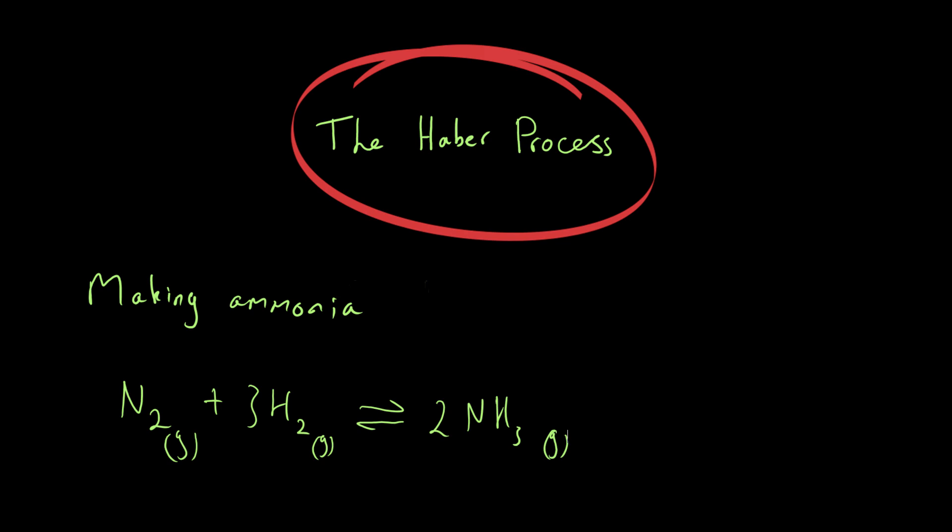Now the first obvious question is why bother? Why do we hear about this process quite a lot? Well, plants need nitrogen just like we do, but plants photosynthesize and produce carbohydrates which don't contain nitrogen. They still need nitrogen to make their proteins and grow properly. Ammonia obviously contains nitrogen, but a better way for plants to take in nitrogen is through their roots in the form of nitrates. Ammonia can be used to produce nitrates, so making ammonia as a starting point is a very good idea.